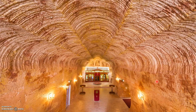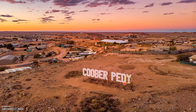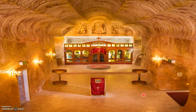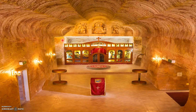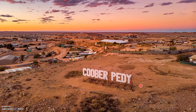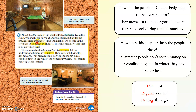These are some different pictures of Coober Pedy. As you can see here, the houses are underground. About 3,500 people live in Coober Pedy, Australia. From the streets, you might see only dirt — which means dust — and some trees. That's it. But under the ground, there are homes. More than half of the people in the town live in underground houses. These are regular houses that look a lot like your house.